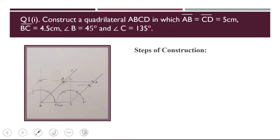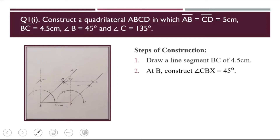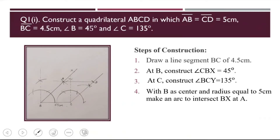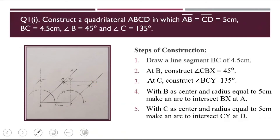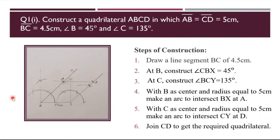Let us revise the steps of construction. My first step was drawing BC equal to 4.5 cm. Then at B, I drew angle CBX equal to 45°. Then at C, I made an angle of 135°. With B as center and radius 5 cm, I made an arc to get point A. With C as center and radius 5 cm, I made an arc to get point D. I joined A and D to get the required quadrilateral ABCD. The answer statement is: hence ABCD is the required quadrilateral.